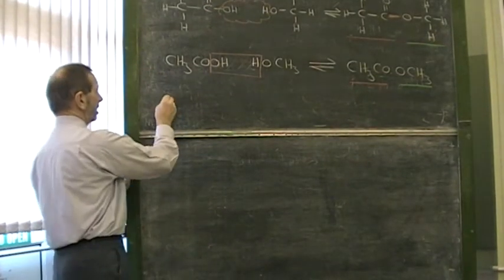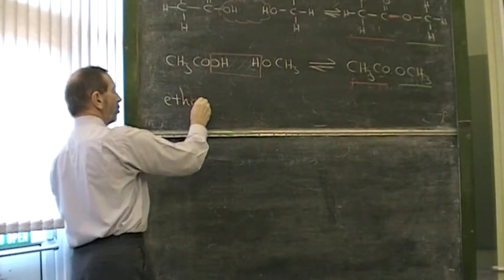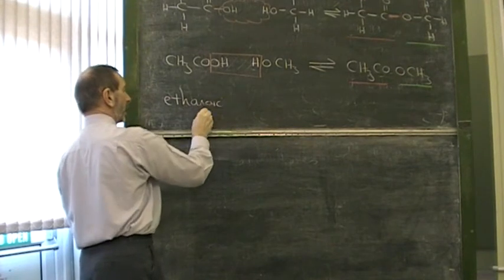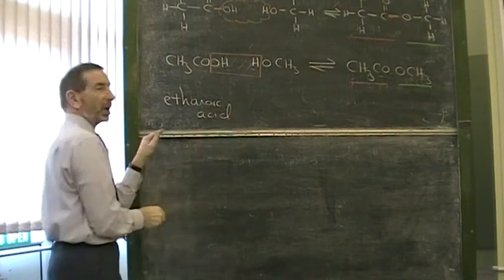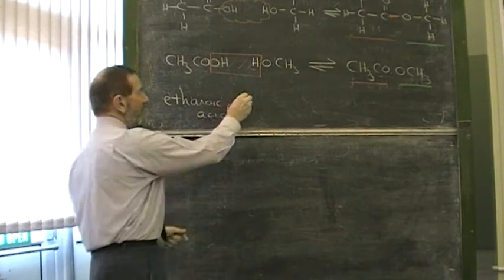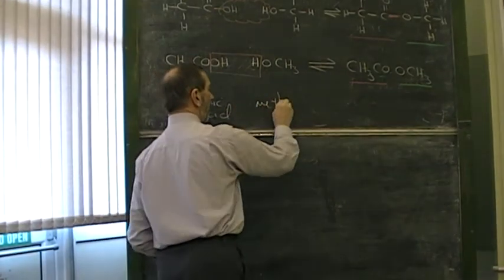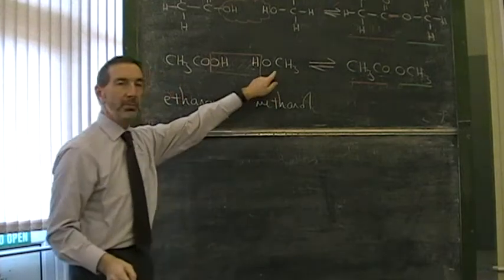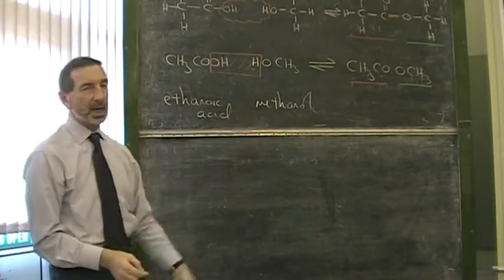Well, this acid was ethanoic acid. Ethanoic acid because it has two carbons based on ethane. This is methanol. It's called methanol because it's based on methane with one carbon. What's the ester?